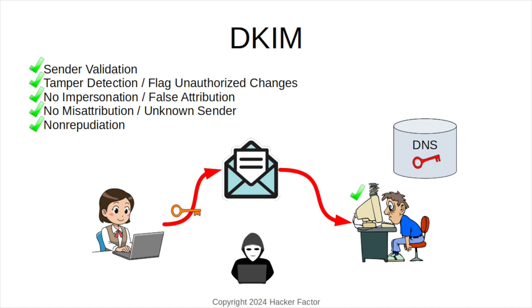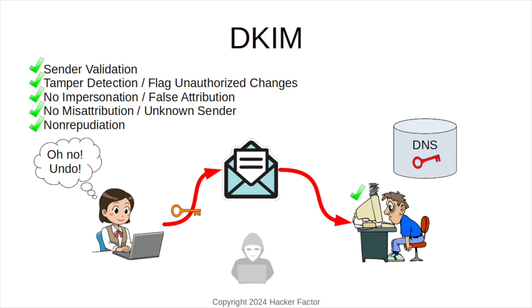It stops impersonations because they don't have your private key from your mail server. If there is no signature, then the recipient's mail server either rejects it as spam or marks it as untrusted. And it even handles non-repudiation — a valid signature means that you sent that email because only you have the private key. You can't disavow an email that you really did send.